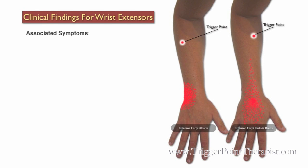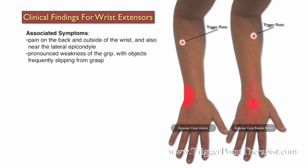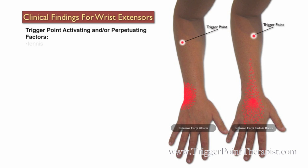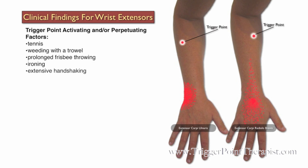Clinical findings for the wrist extensor trigger points: clients may complain of pain on the back and outside of the wrist and occasionally near the lateral epicondyle. They will describe a pronounced weakness of the grip with objects frequently slipping from their grasp. Activating and perpetuating factors include playing tennis, weeding with a trowel, prolonged frisbee throwing, ironing, extensive handshaking, and prolonged immobilization of the arm after shoulder injury.